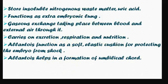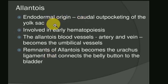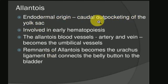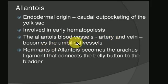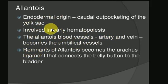The Allantois is endodermal in origin, looking like a caudal outpocketing of the yolk sac, and it is involved in early hematopoiesis — the formation of blood cells. The Allantois blood vessels, the artery and vein, become the umbilical vessels.